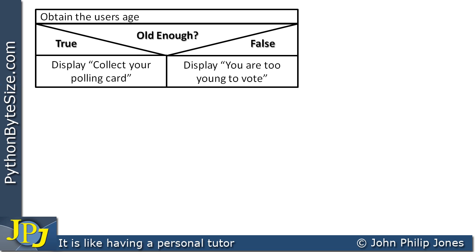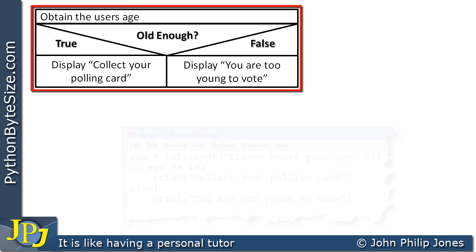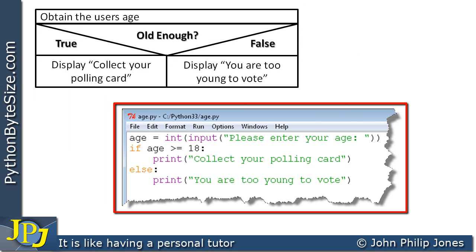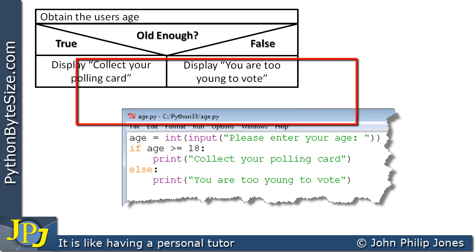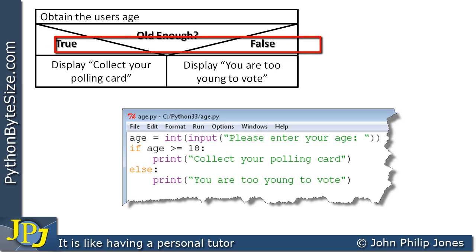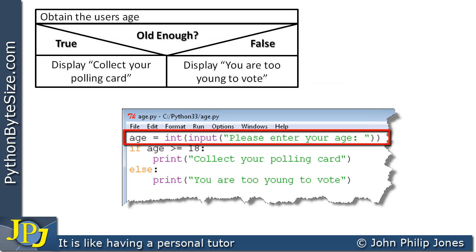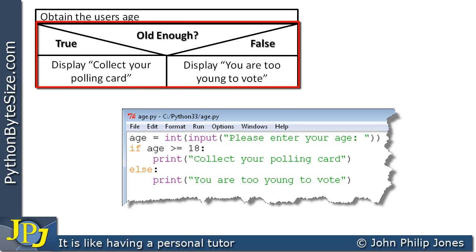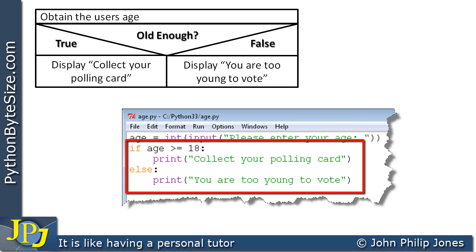The Nassi-Schneiderman chart is the algorithm — the solution to the specification. Here we can see the Python code derived from the NS chart. The first line of the NS chart corresponds to the first line of code, which outputs the string 'please enter your age,' converts the user's input to an integer, and stores it in the variable age. The selection construct area of the NS chart represents the if-else construct, corresponding to these four lines of code.